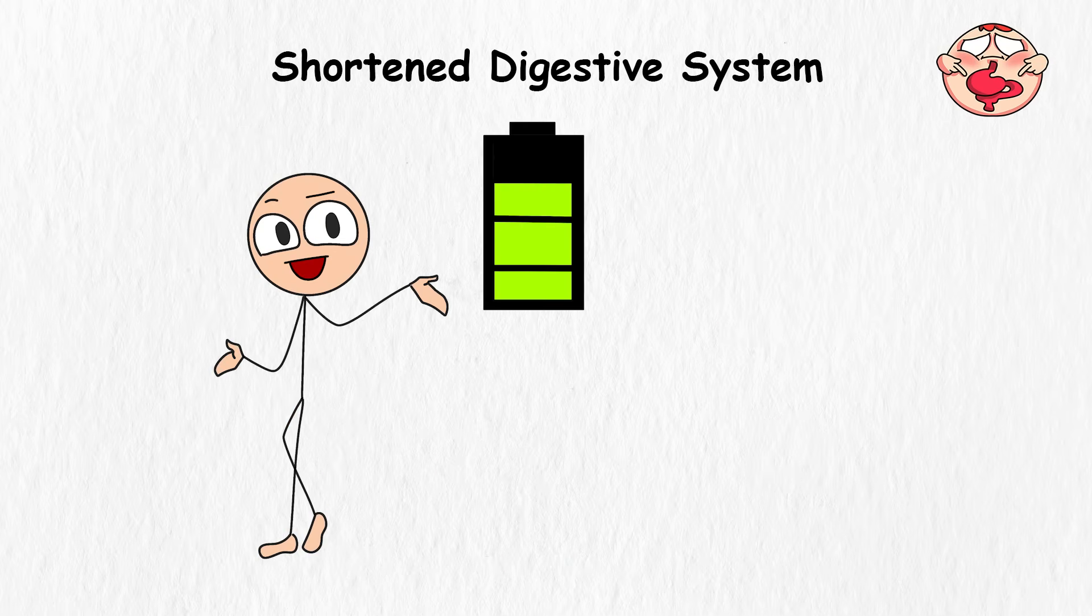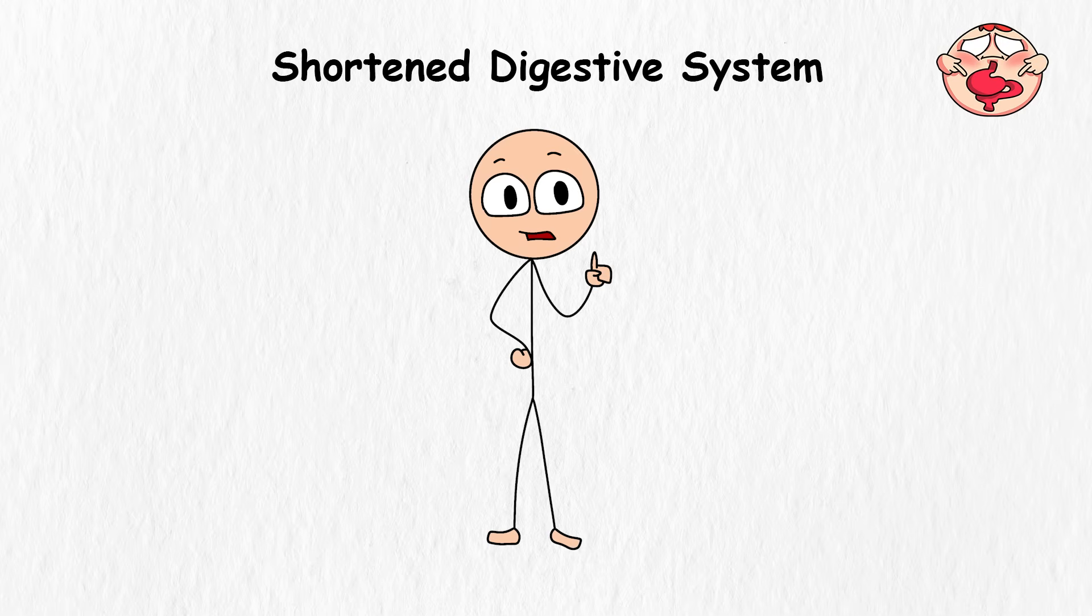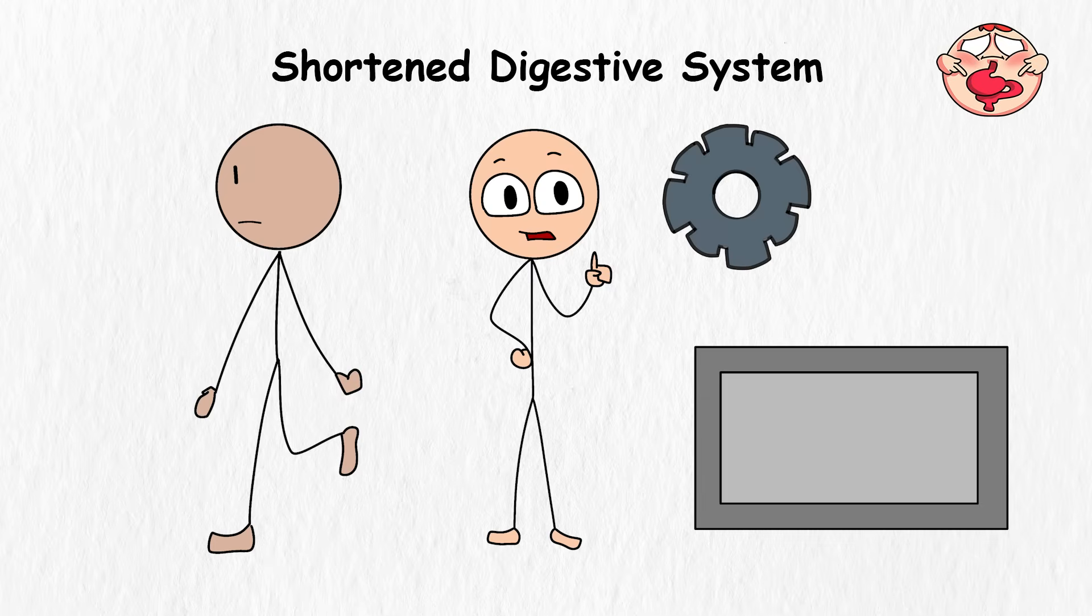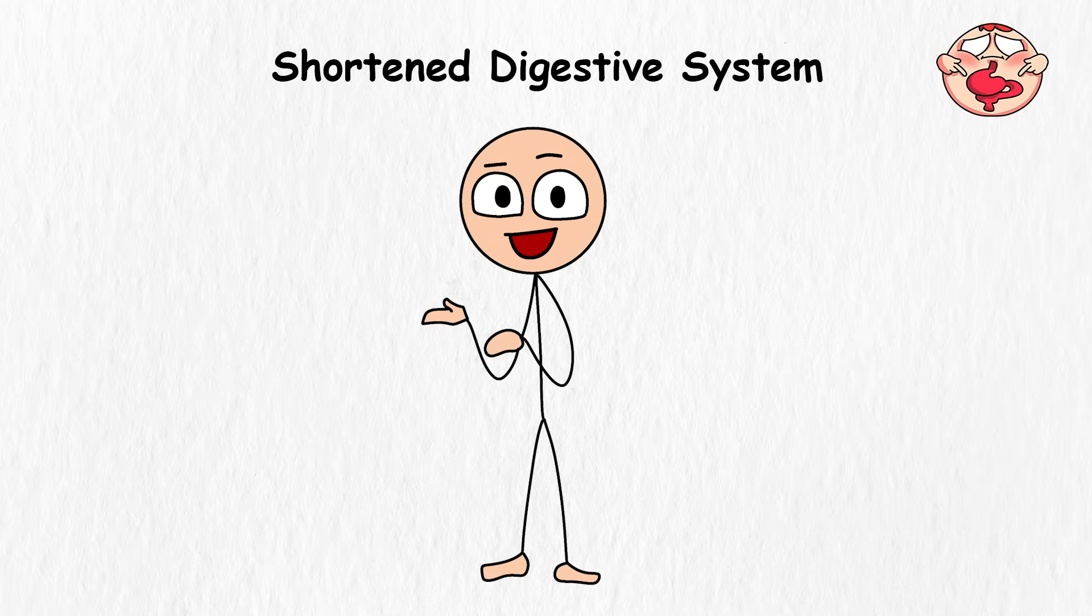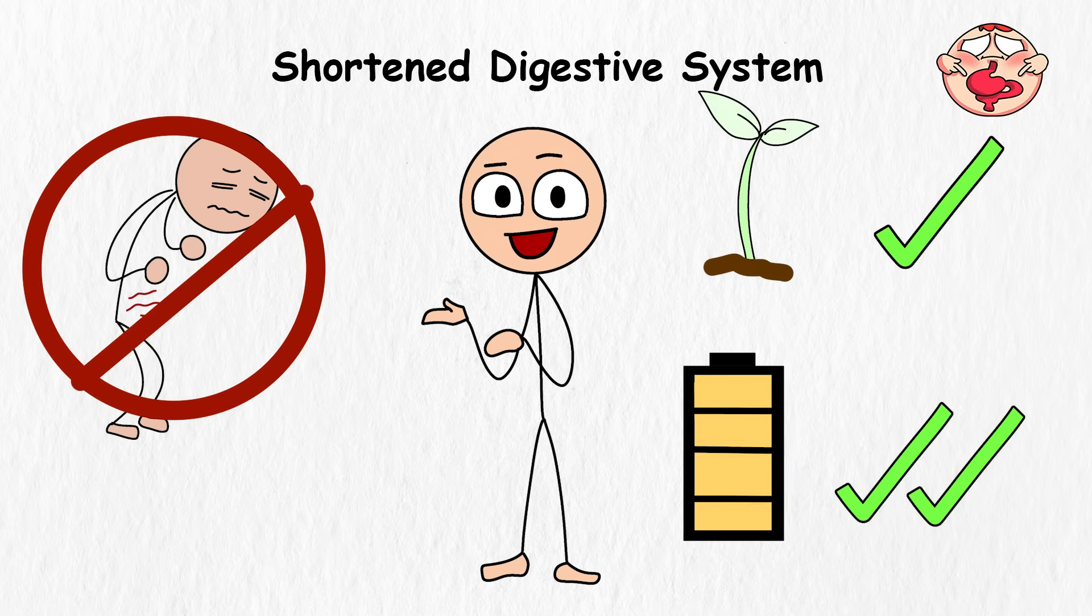Another reason is energy conservation. You see, the digestive system is a surprisingly demanding energy hog, so if evolution trims it down, you'd save a lot of fuel for more important things like thinking, moving, or binge-watching your favorite shows. Think about it this way. Upgrading to a shorter digestive system is like swapping a gas-guzzling car for an electric one. Environmentally friendly? Check. Energy efficient? Double check. Less noisy gurgling in your belly? Triple check.